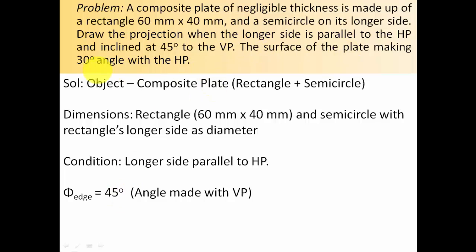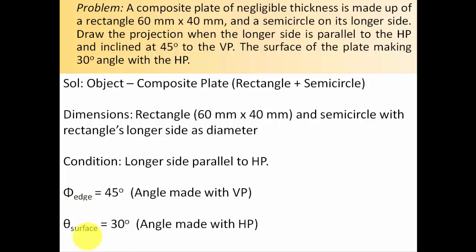The surface makes a 30 degree angle, so theta equals 30 degrees. Theta is associated with inclination with the horizontal plane, and phi is associated with inclination with the vertical plane.